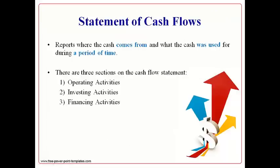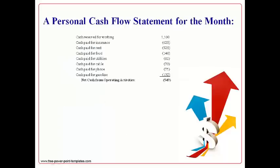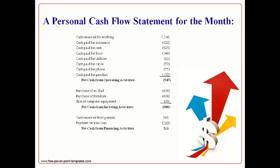The statement of cash flows specifically reports where cash comes from and what cash is used for during a period of time. This statement shows three sections: operating activities, investing activities, and financing activities. The cash flow statement is necessary because cash is not the same thing as income reported on the income statement. The top section lists items received and paid in cash related to day-to-day life. The middle section lists cash paid and received related to long-term assets. The last section, financing activities, lists cash received from parents acting like investors and from borrowing money. The total change in cash is netted with the cash at the beginning of the period to get the cash on hand at the end of the period, which will agree to the cash reported on the balance sheet.